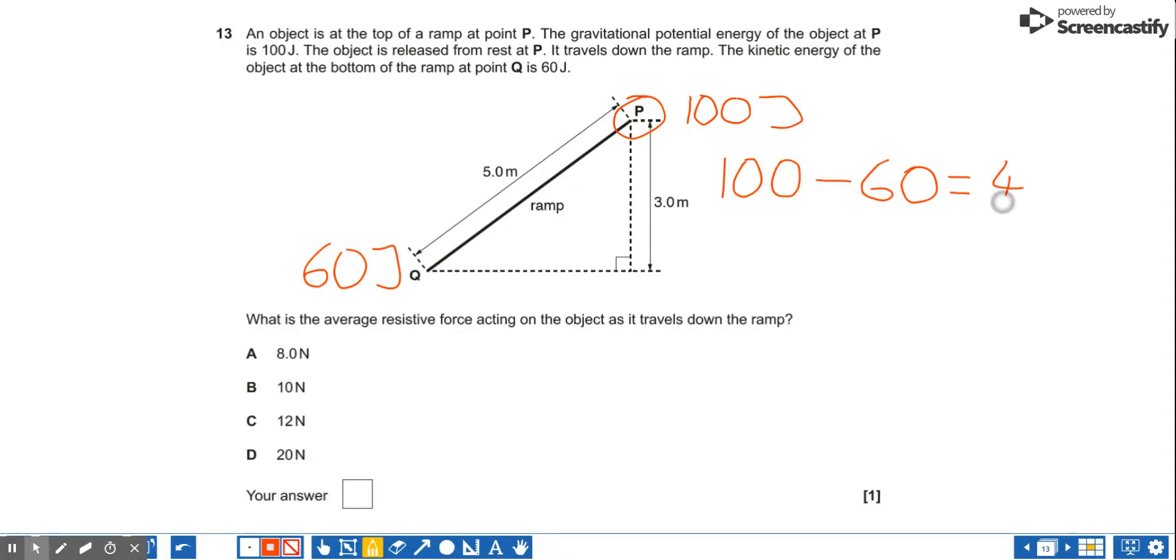Then it has done 40 joules of work. And the definition of work done is equal to the force multiplied by the distance moved in the direction of the force. So this resistive force is going to be acting up the ramp and therefore it's travelled a distance of 5 meters.